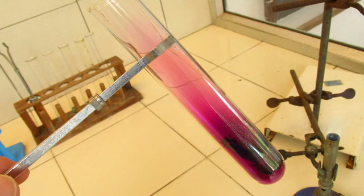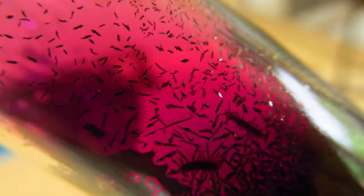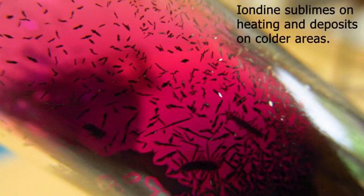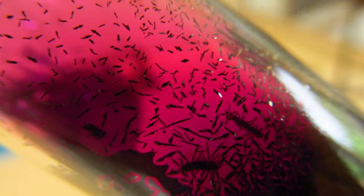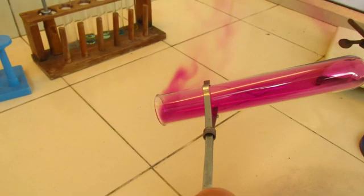If you heat up the test tube strongly, obviously it would sublime vigorously and the purple gas is produced, which is depositing on the walls of the test tube forming crystals. The gas is more dense than air, so you can pour it down if you wish. It's purple in color. As I say again, this is the color of separate molecules of iodine.